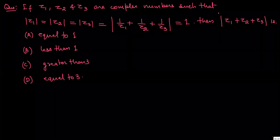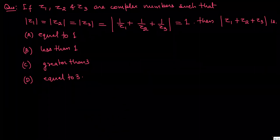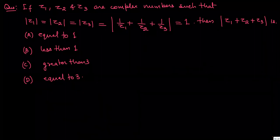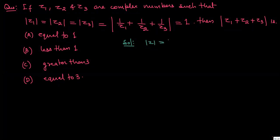Sir, I have one minute. What is the way to solve this problem? If mod z is 1, and there is any complex number where mod z is 1, then mod of z squared will also be 1. That means z-bar will equal 1, and so 1 upon z equals z-bar.